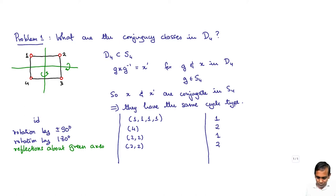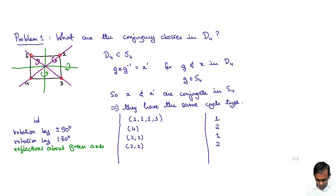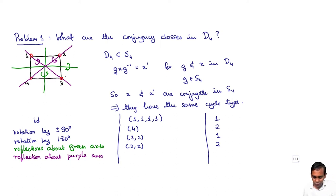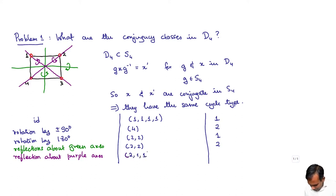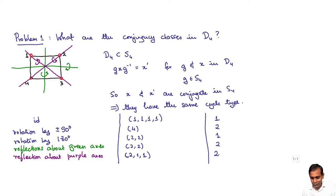We have found 6 elements so far; the remaining two are reflections about diagonal axes passing through the vertices (purple axes). The reflection about the axis through vertices 1 and 3 fixes 1 and 3 and interchanges 2 and 4, giving cycle type (2,1,1). There are two such elements. Certainly elements with different cycle types cannot be in the same conjugacy class; all we need to determine is whether elements of the same cycle type are in the same conjugacy class.